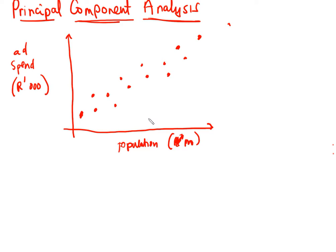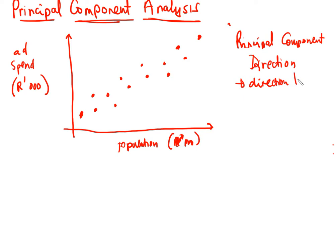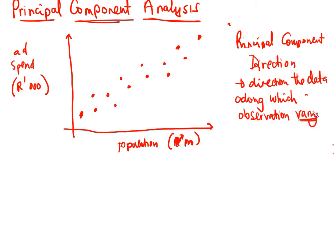I'm going to define something called the principal component direction. This is defined as the direction along which the observations vary the most. They vary the most in that direction — that is called the principal component direction.